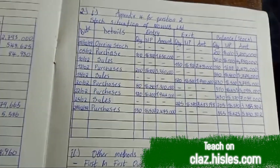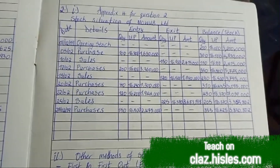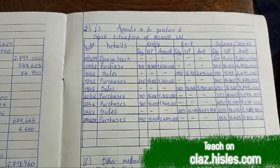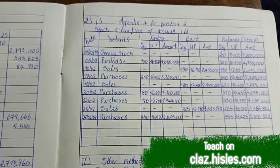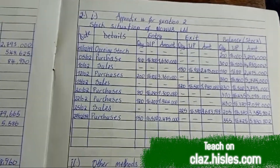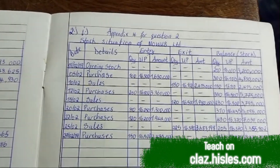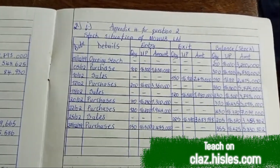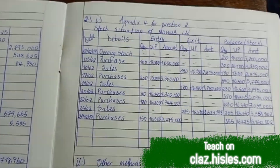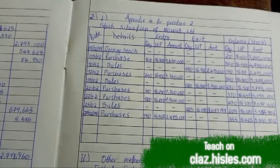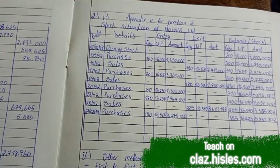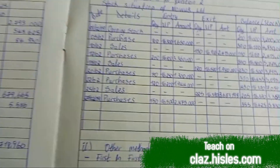For the second question, we had a stock bin card to present. We presented it using the weighted average cost after each entry. We simply added quantities and amounts: when there's a purchase, we add the quantities and amounts, divide the amount by the quantity to get the unit price, and when there is a sale, we use that same unit price.